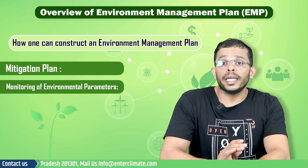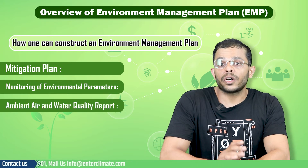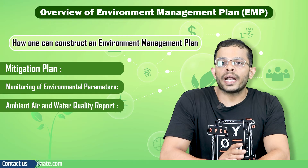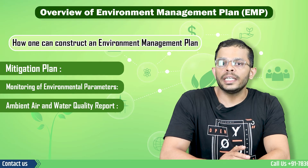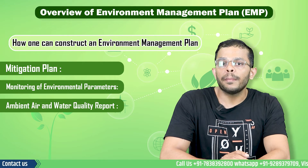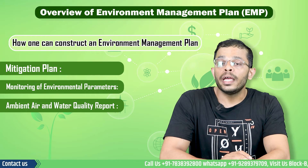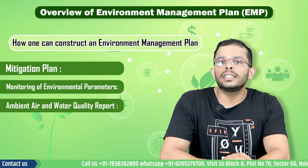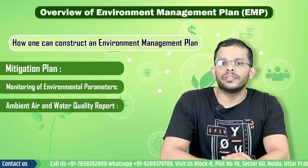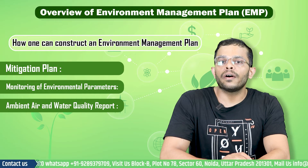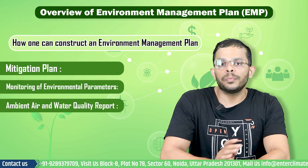Third is the ambient air and water quality report. Parameters to assess air quality include monitoring the levels of SPM, RPM, SO2, NO2, or any other pollutant specified by the authorities depending on the nature of the project.